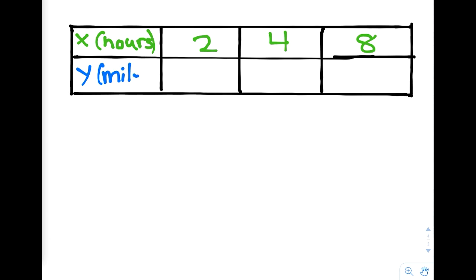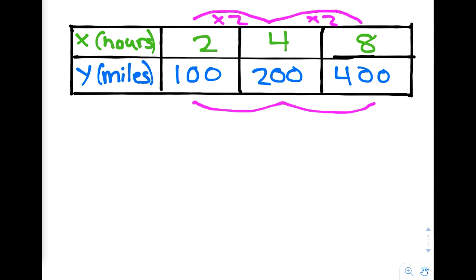As you can see, our x is hours and our y is miles. The first column in the table is 100 miles per 2 hours, like we started with. The second column in the table is 200 miles per 4 hours. The third column is 400 miles per 8 hours. We can see that in both rows that the amounts are being multiplied by 2 each time we go a column further to the right.